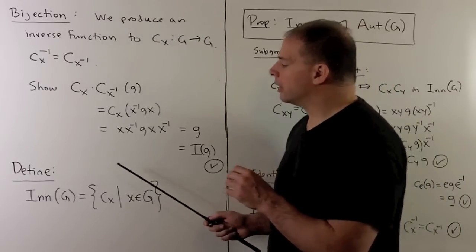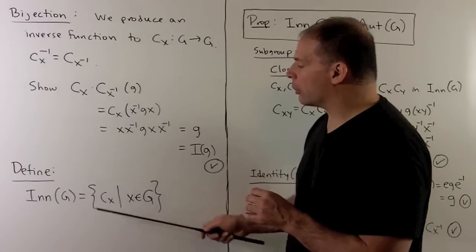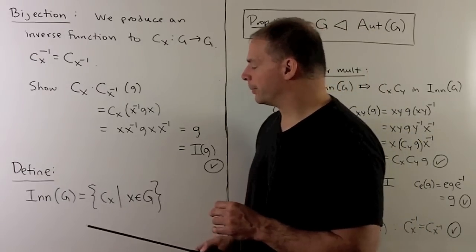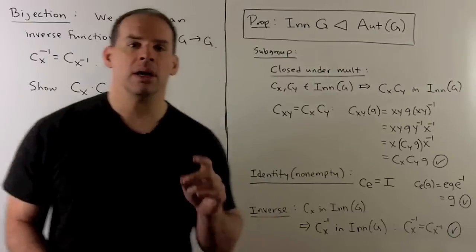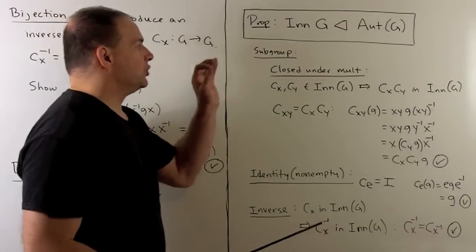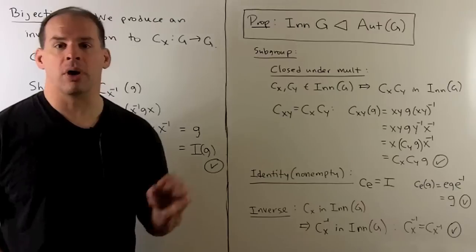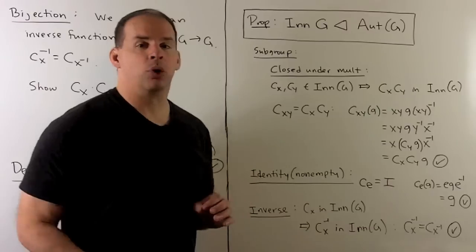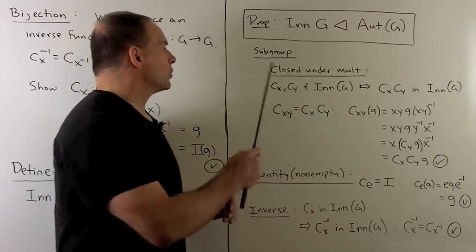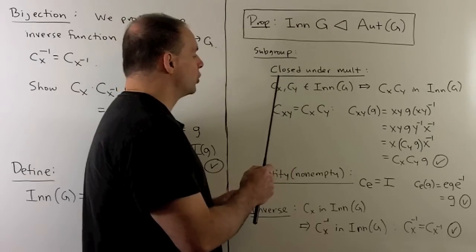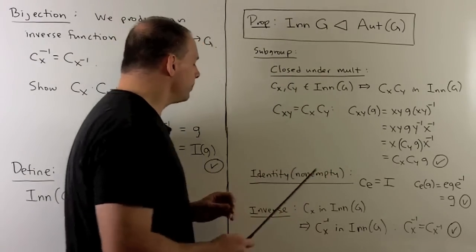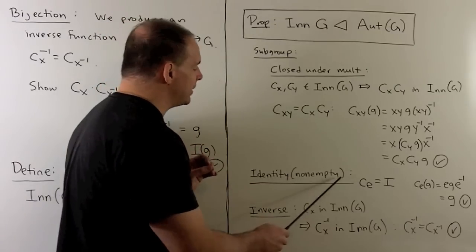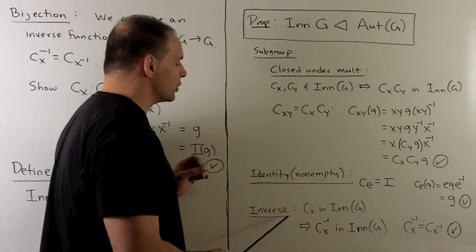If we collect all these inner automorphisms, we denote this set Inn(G). Claim: Inn(G) is a normal subgroup of Aut(G). We'll first show it's a subgroup, then show it's normal. For subgroup, we show closure under multiplication, existence of an identity element, and closure under inverses.